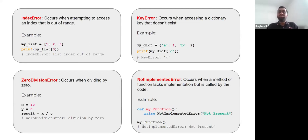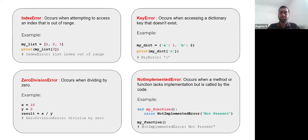So don't panic — this is because you missed out on implementing a function. Go back to your code, check which function you have not implemented, write your implementation, and make sure your code works.